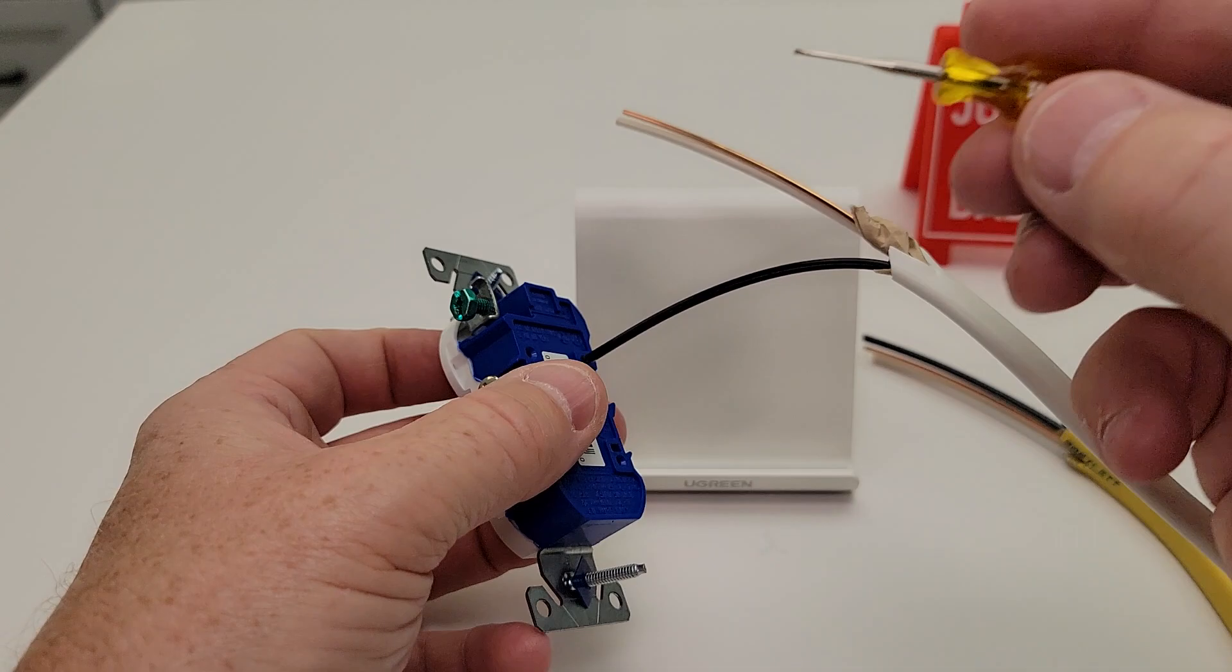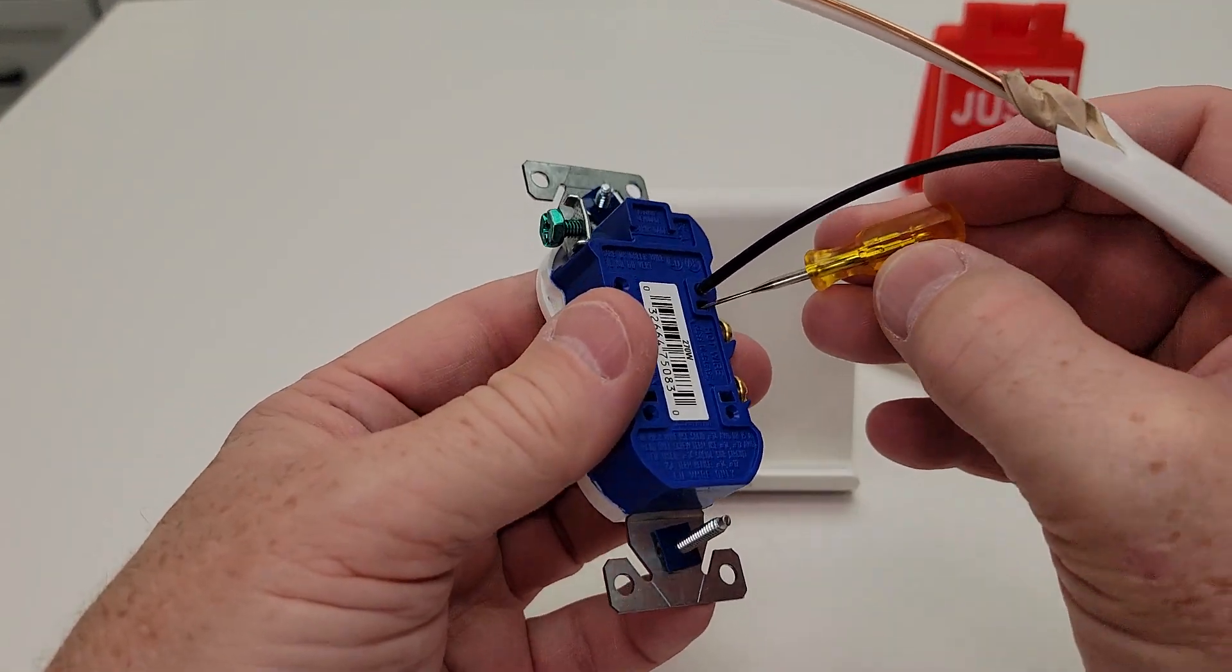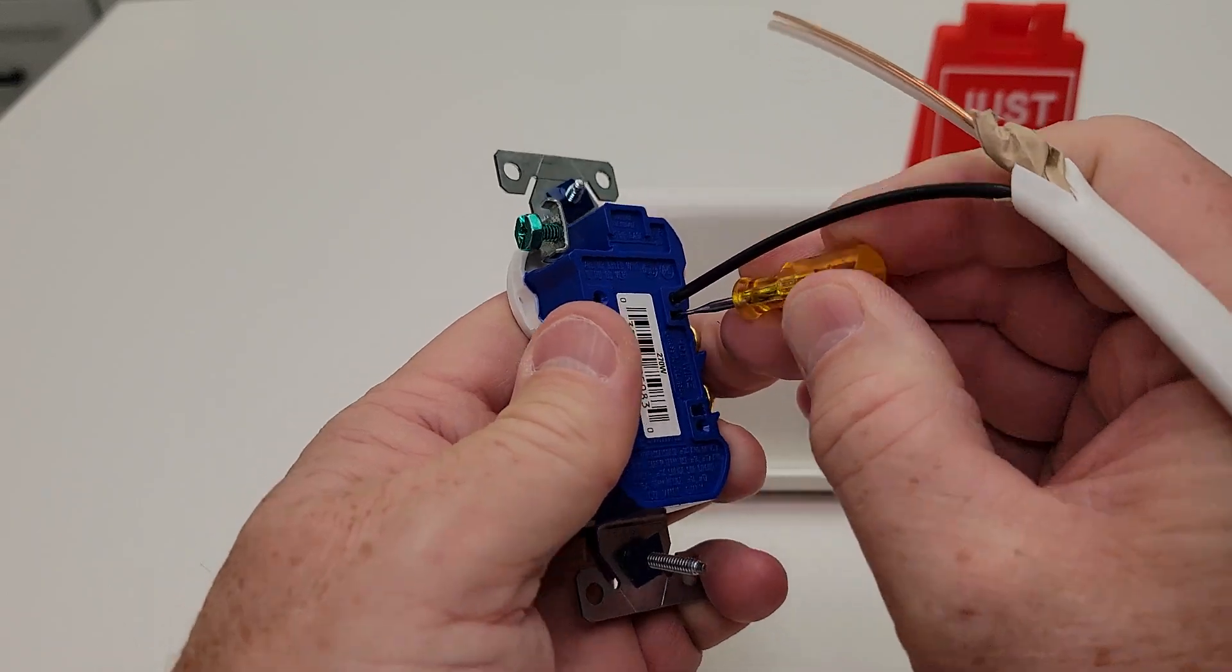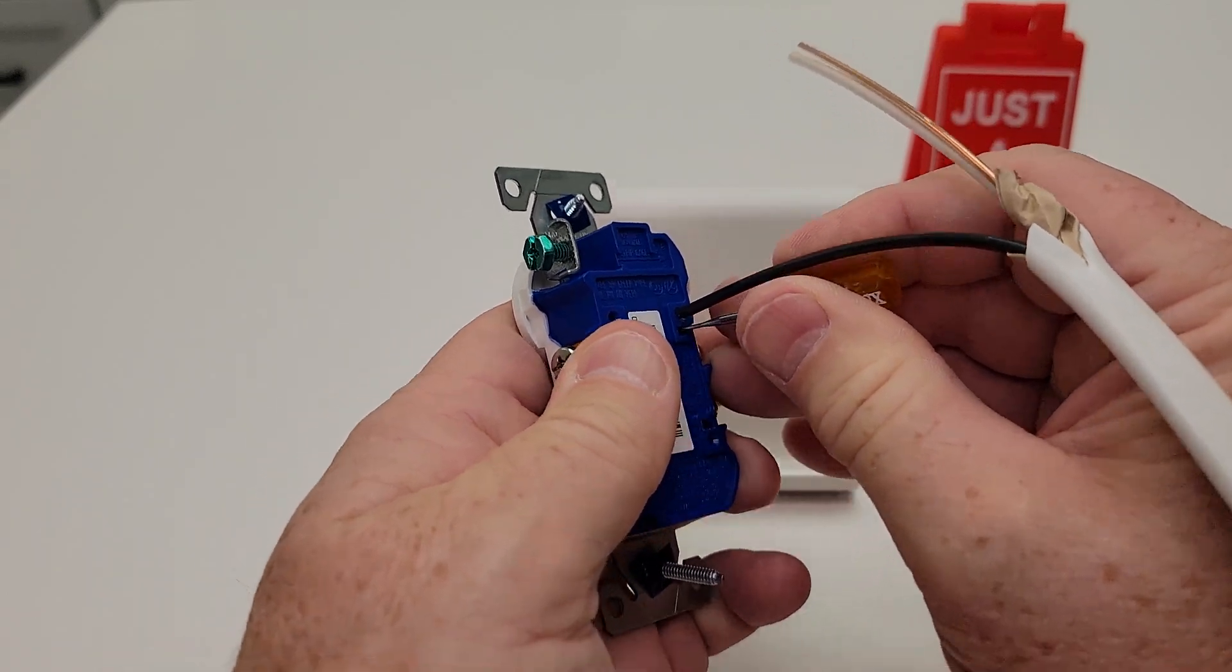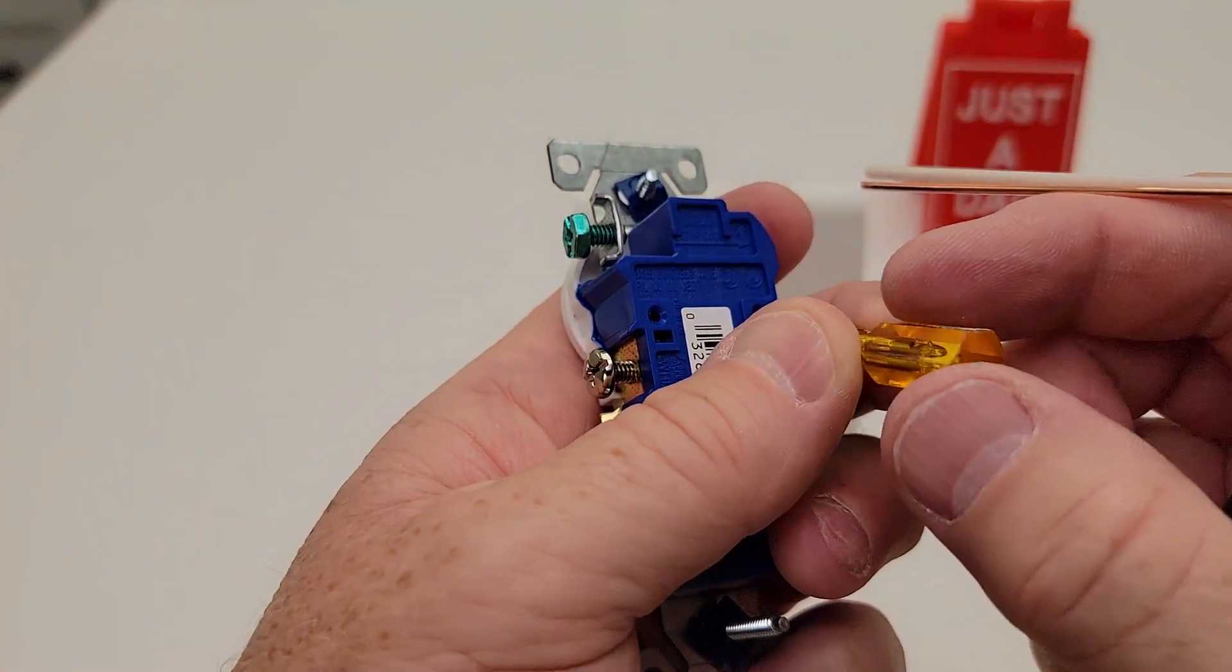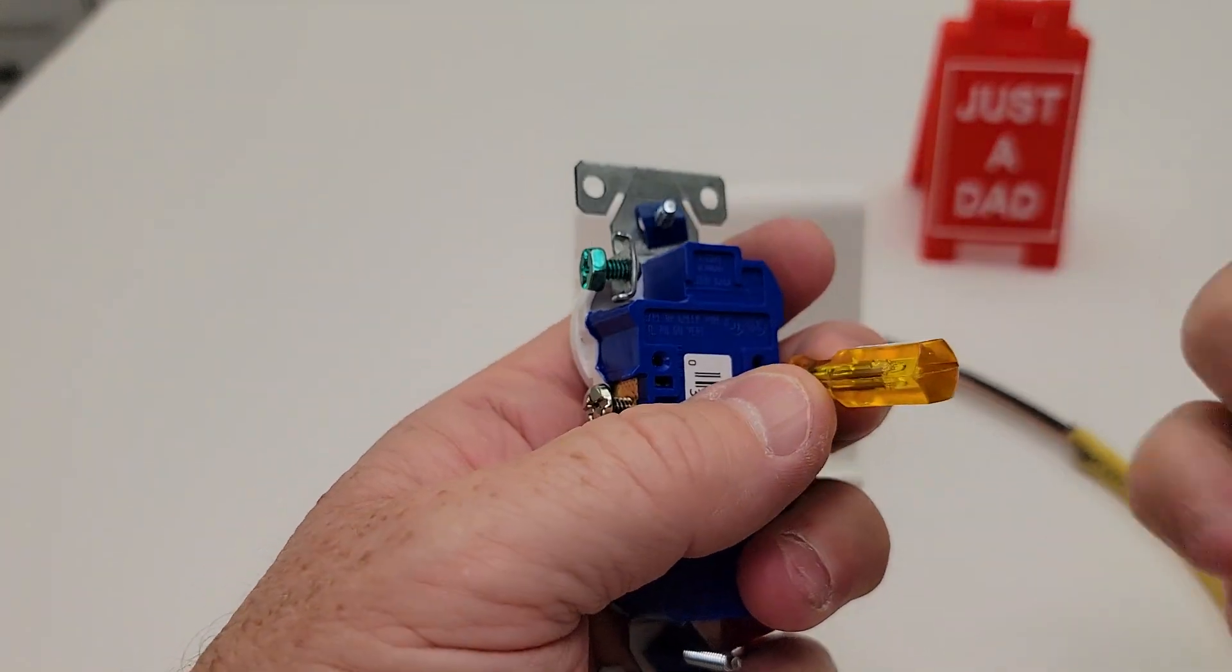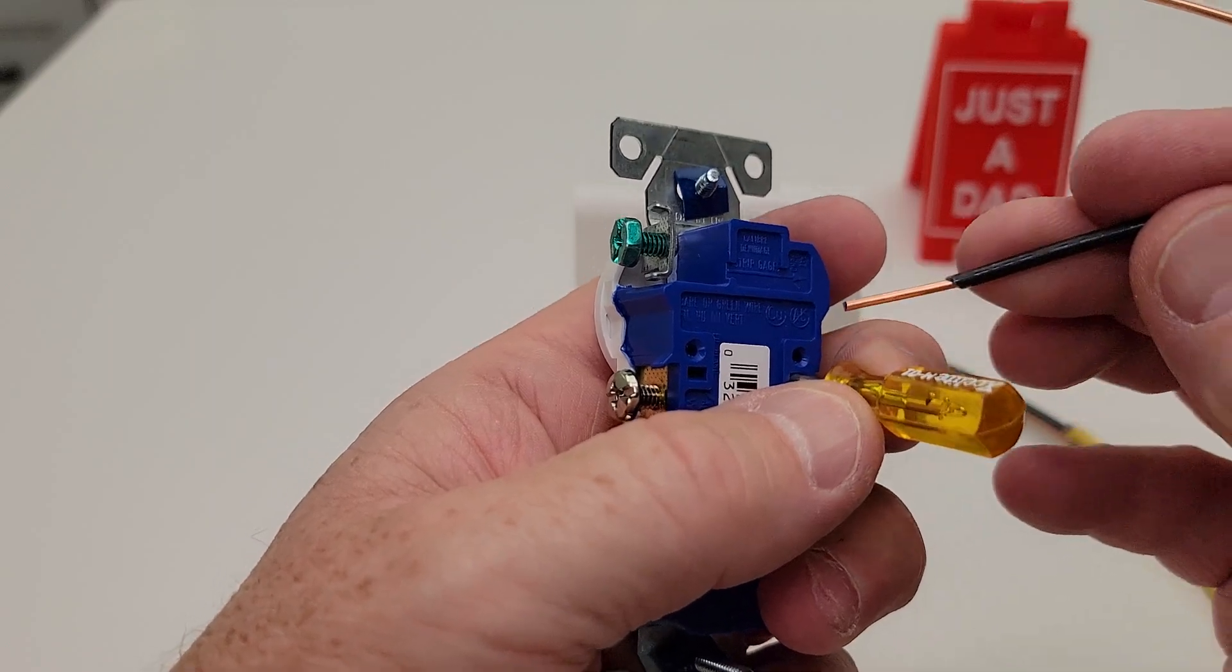Now, if you ever need to remove it, it takes a really small straight slot. You're going to push it in and that's going to push that tab away. It's a little tricky to show, but once you push this tab in with a screwdriver, then I can pull the wire straight out.